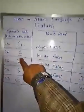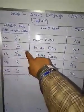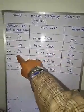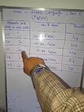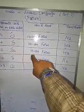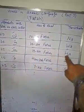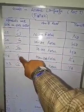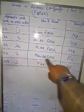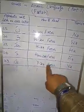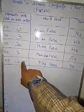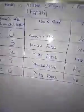The 26th is Waw, having Fatah — Waw Fatah is 'wa'. The 27th is Ha, having a short diagonal stroke — Ha Fatah is 'ha'. The 28th is Hamza, having a short diagonal stroke — Hamza Fatah is 'a'. The 29th is Ya — Ya Fatah is 'ya'.